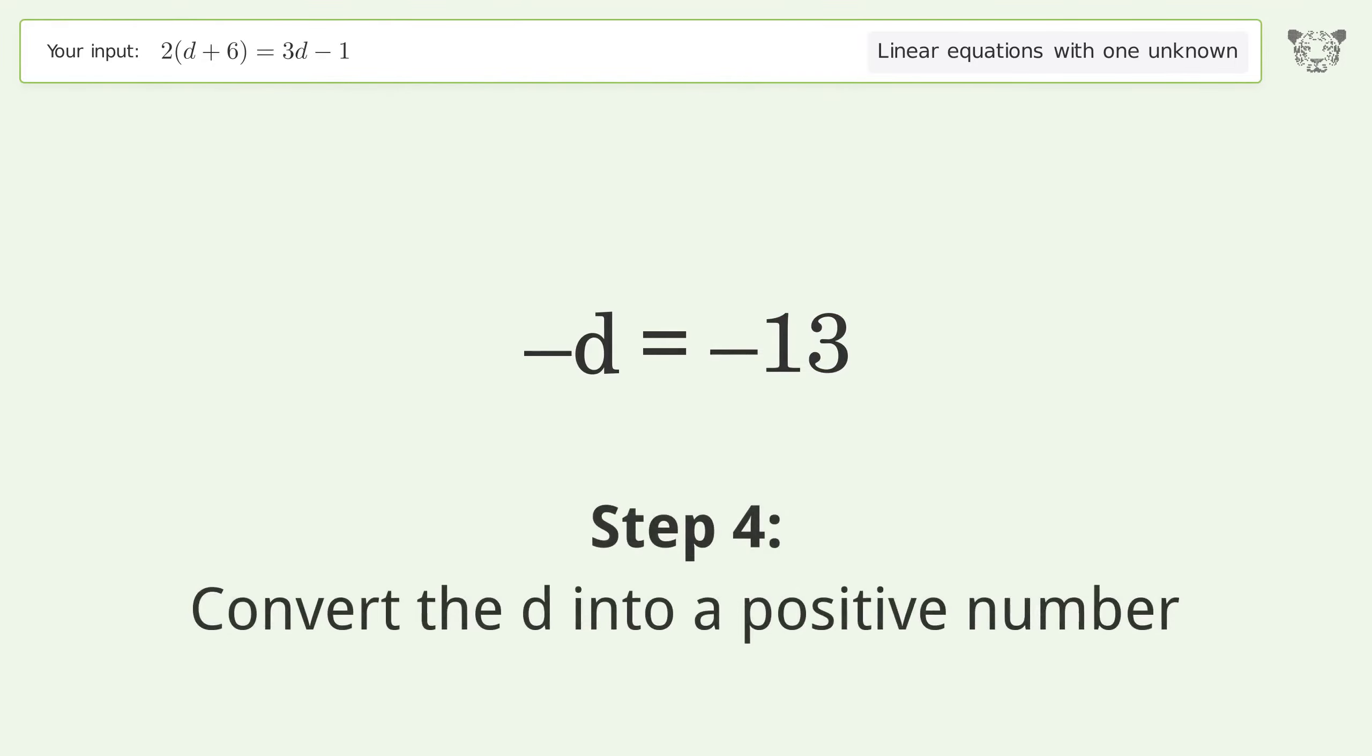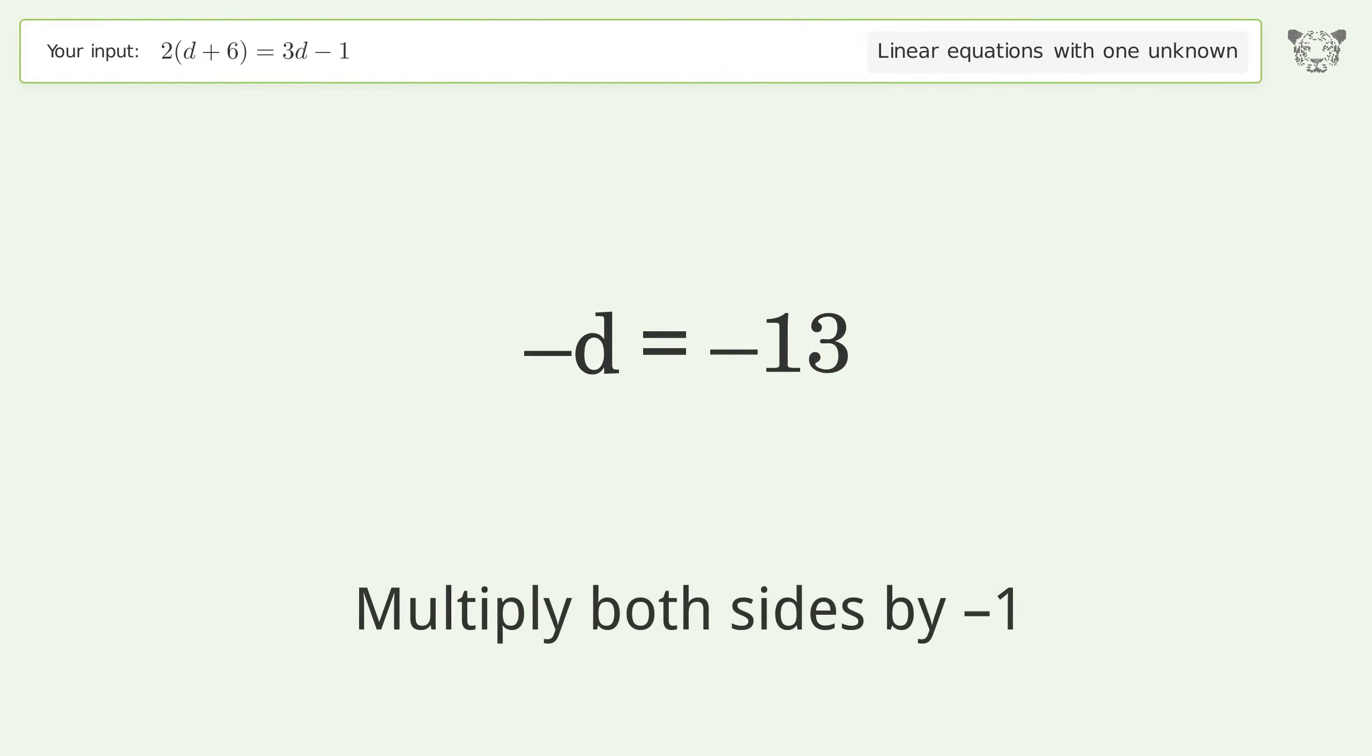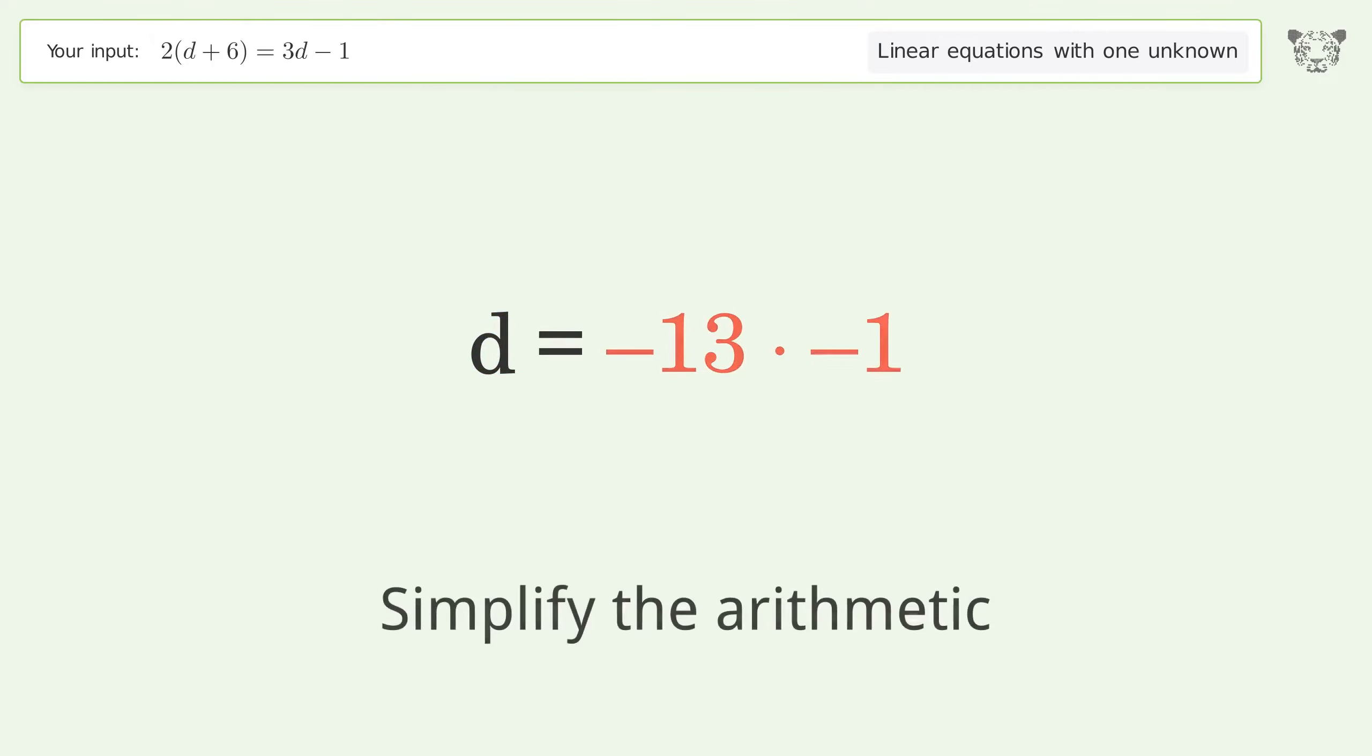Convert the d into a positive number. Multiply both sides by negative one. Remove the ones. Simplify the arithmetic.